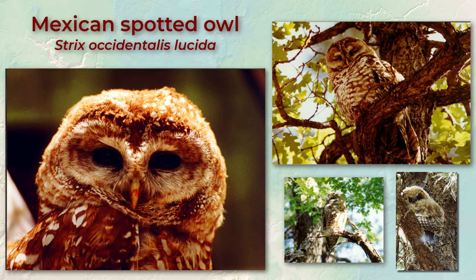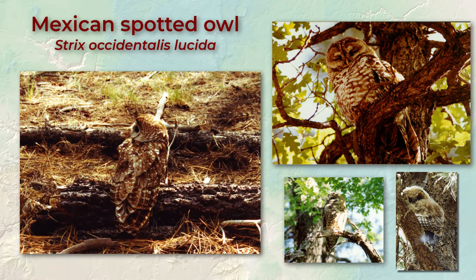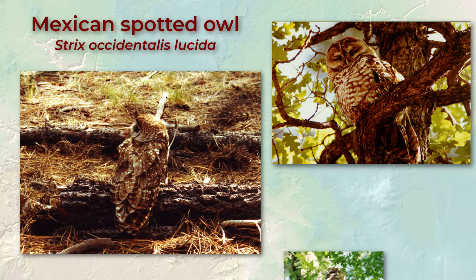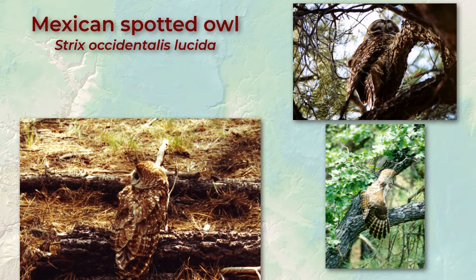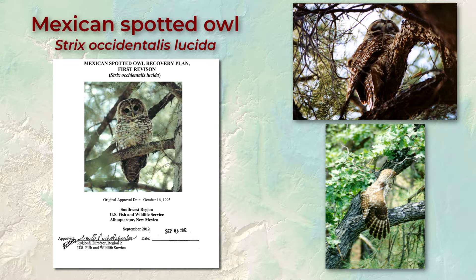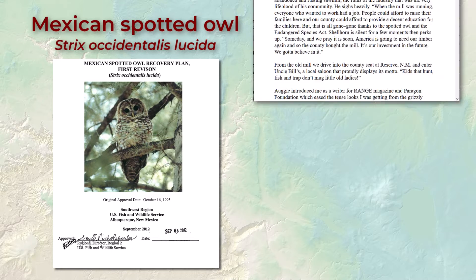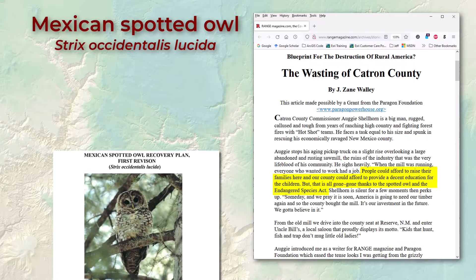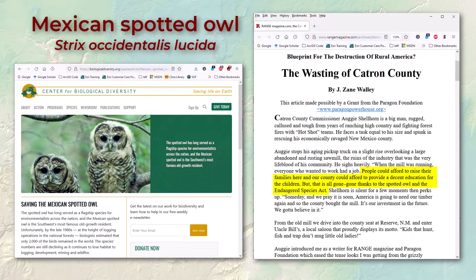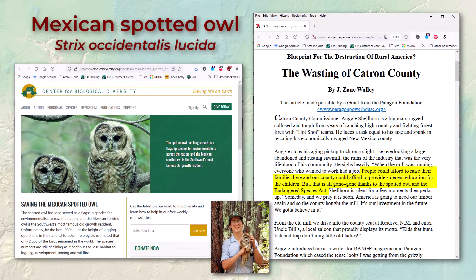We're going to use the Mexican spotted owl for the minimum convex polygon and kernel density exercises. This spotted owl subspecies lives throughout the forests and canyons of Arizona and New Mexico, southern Utah and Mexico and parts of Colorado and Texas. They were declared a threatened species by the U.S. Fish and Wildlife Service back in 1993 and have been a major component of southwestern national forest planning for the last four decades.